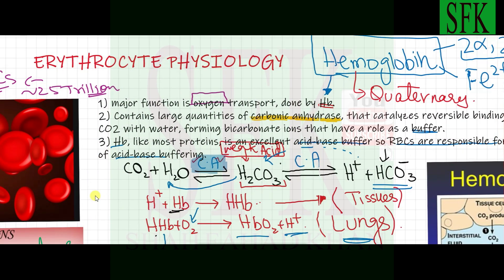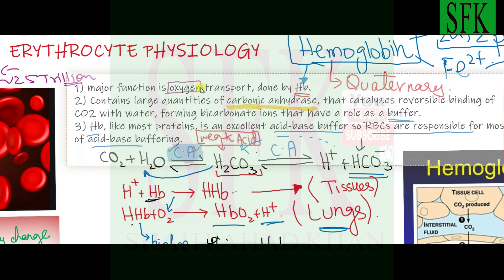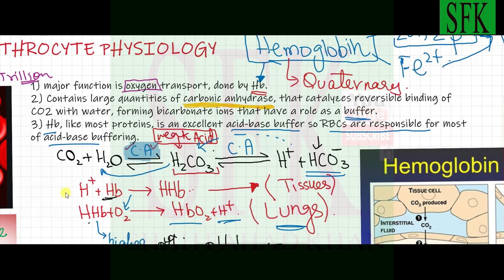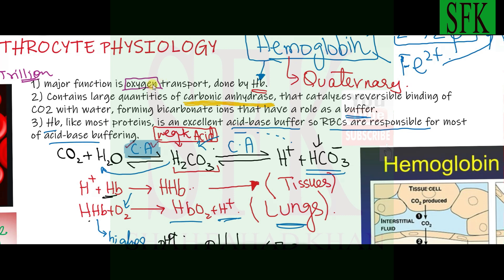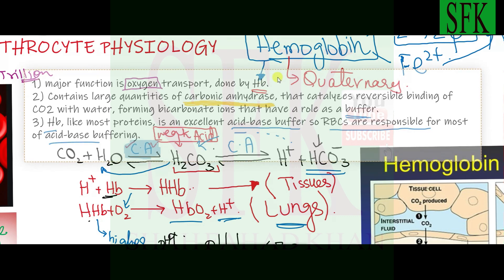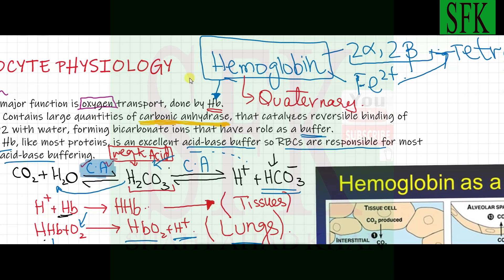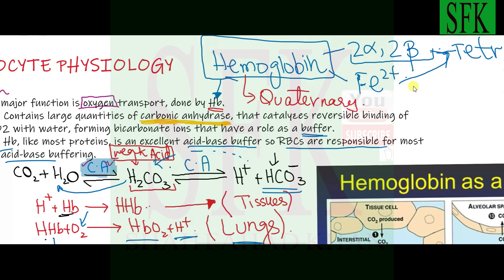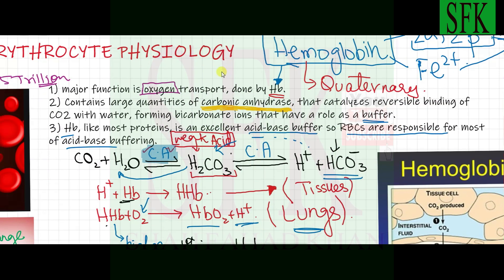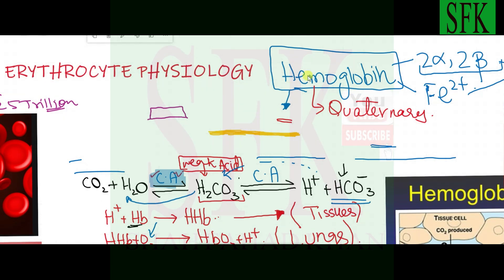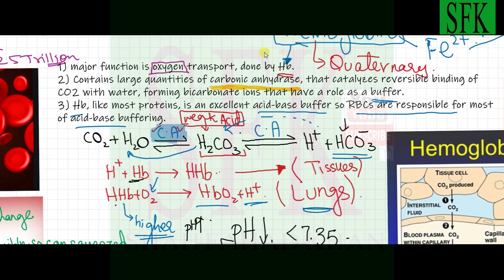The major function of erythrocytes is oxygen transport. Oxygen is critical for aerobic respiration and the electron transport chain — it is the final electron acceptor. This oxygen transport is possible due to hemoglobin, a quaternary protein inside the red blood cells. Hemoglobin contains two alpha chains and two beta chains, with a heme group at the center — an iron ion coordinated with a tetrapyrrole ring structure — making four polypeptide chains in total.